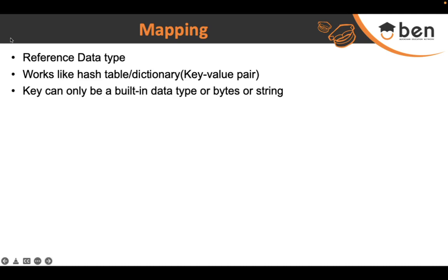Our course ID, which is an unsigned integer, can act as a key and the entire course details can act as the value. Values can be of any type — there is no restriction. It can be any reference or built-in data type. Since we have a lot of course information, it's better to create a struct and keep that struct as the value type in a mapping, so your course ID is linked to the entire struct.